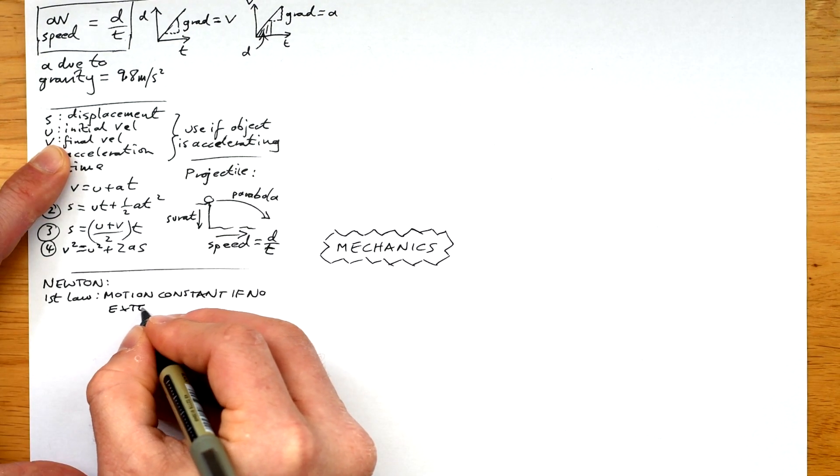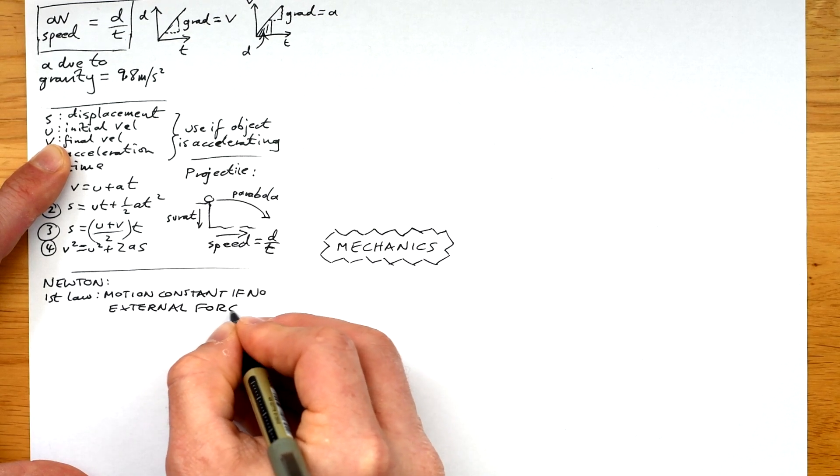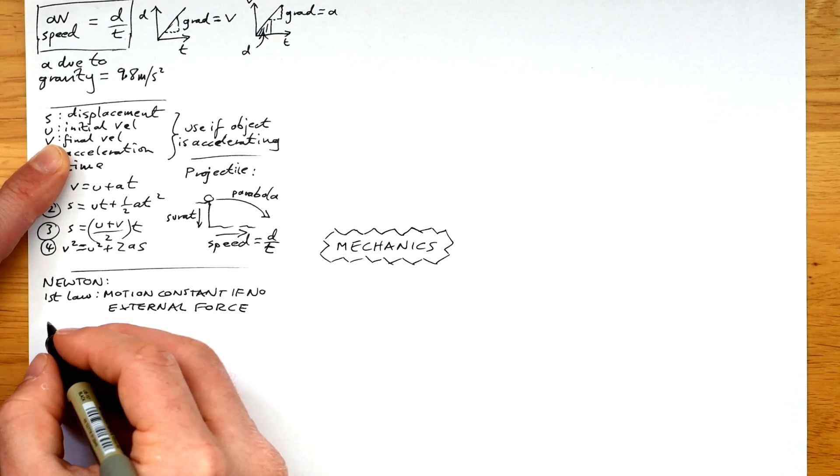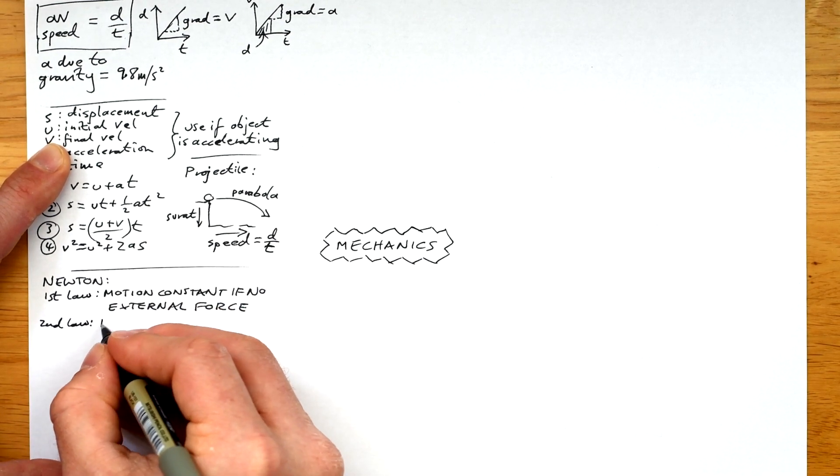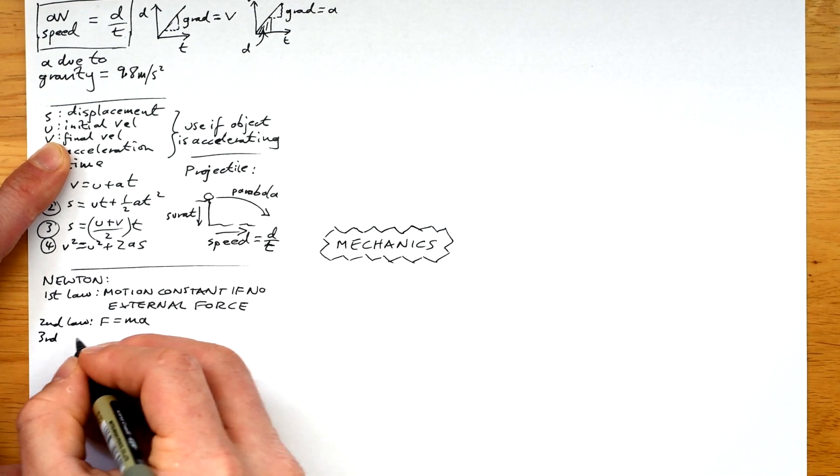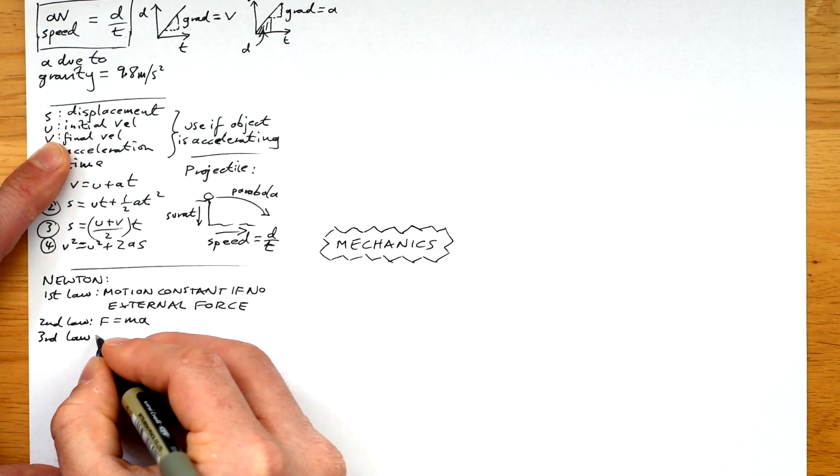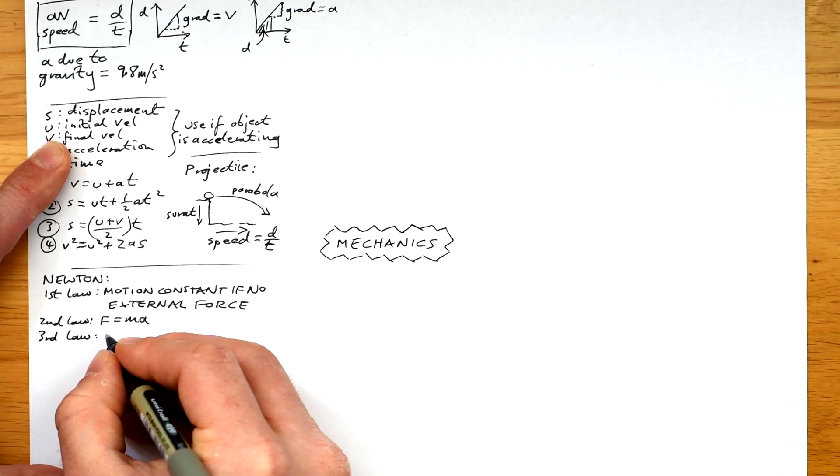Let's have a look at forces. Newton's first law is that an object's motion is constant if there's no external force acting on it. In other words, velocity is constant. Don't forget that that could mean that the direction is changing while speed is staying the same. Circular motion, we're not going into that here though. Second law is F equals MA, force equals mass times acceleration. Don't forget that F is the resultant force doing the accelerating and mass is the total mass being accelerated.